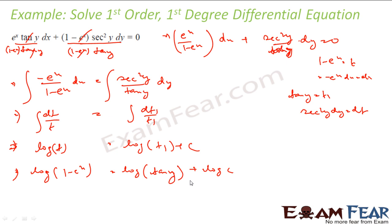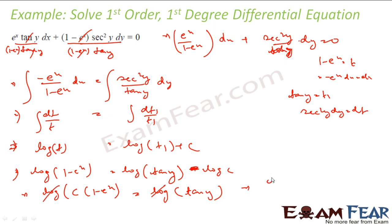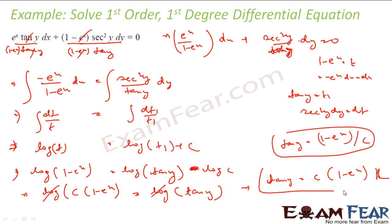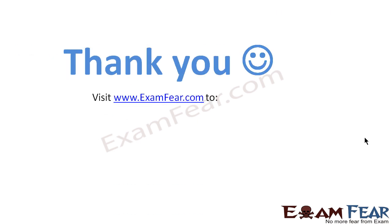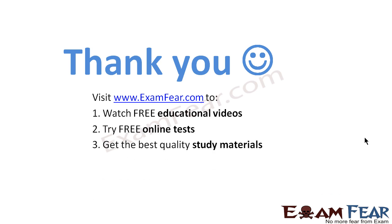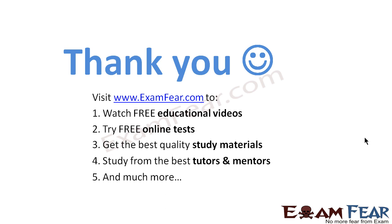Since everything is in log form, merging with minus log c gives log(c·(1 − eˣ)) equal to log(tan y). Removing log from both sides: tan y equals c(1 − eˣ), and that is the answer. If you had taken plus log c you would get tan y equal to (1 − eˣ)/c — both are the same since c is a constant. Thank you — visit examfear.com to watch free educational videos, try free online tests, and get the best quality study materials.